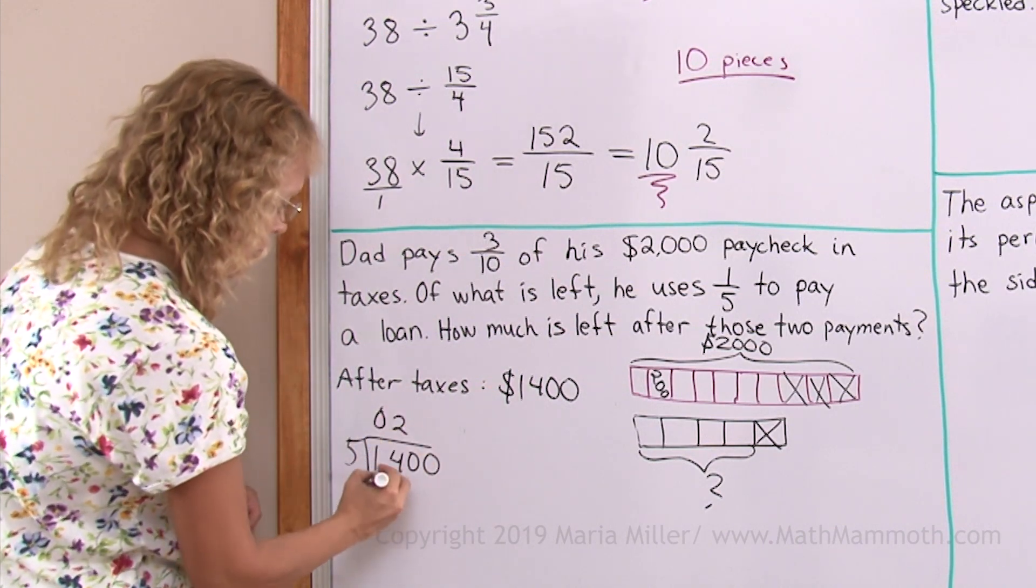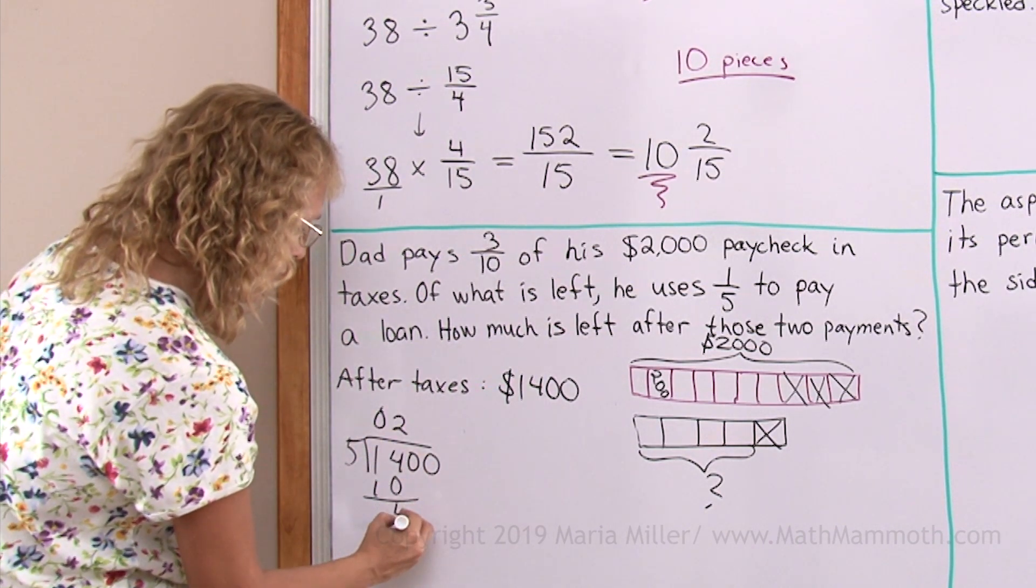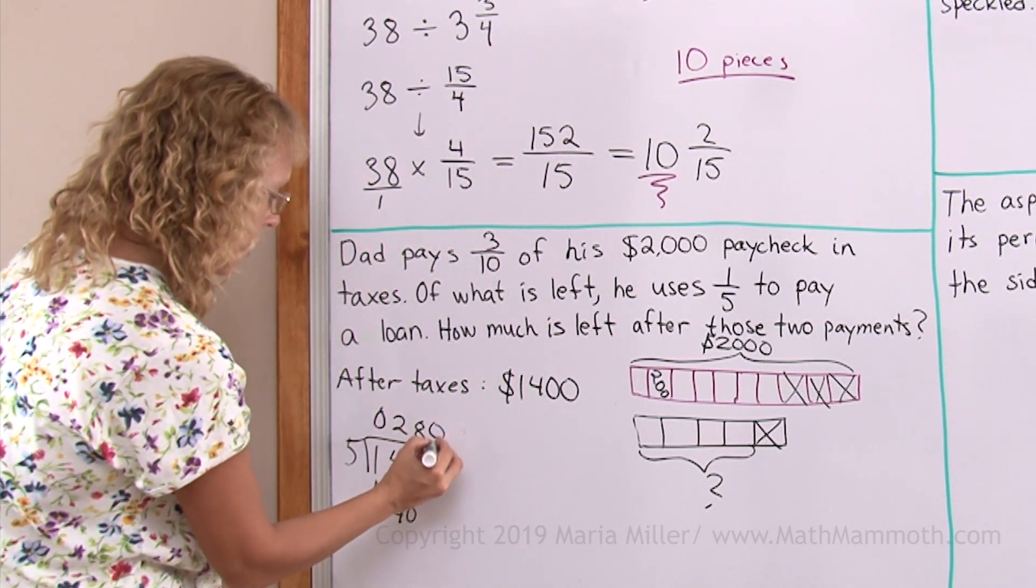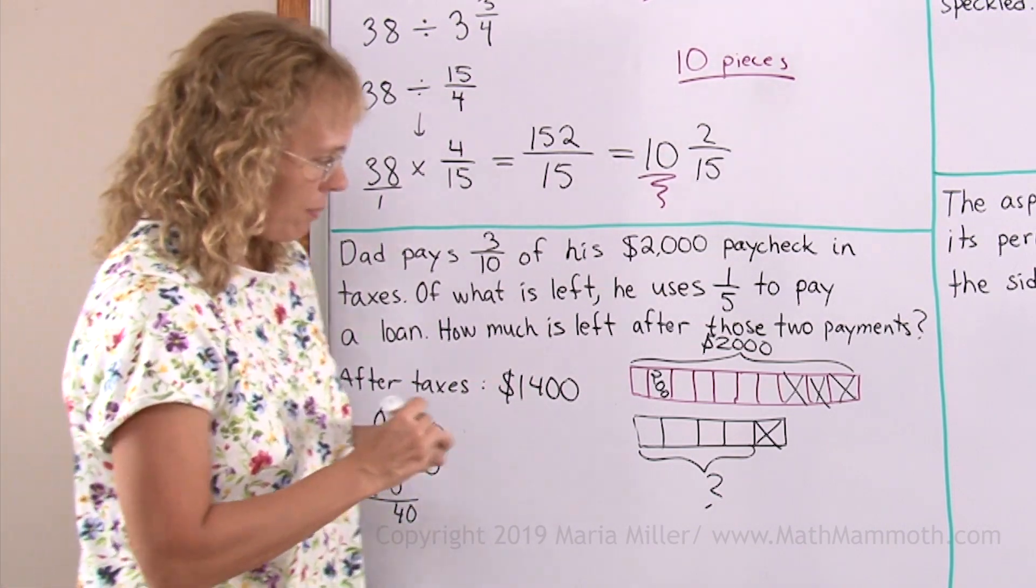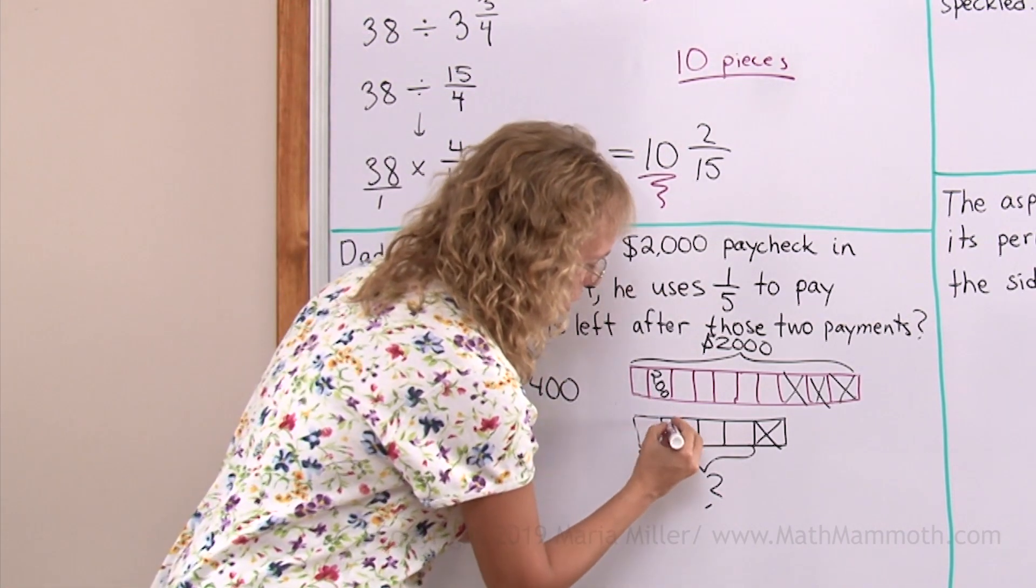Okay, two times five is ten, and then here, forty, that's zero. Two hundred and eighty. Each one of these blocks here is two hundred and eighty.